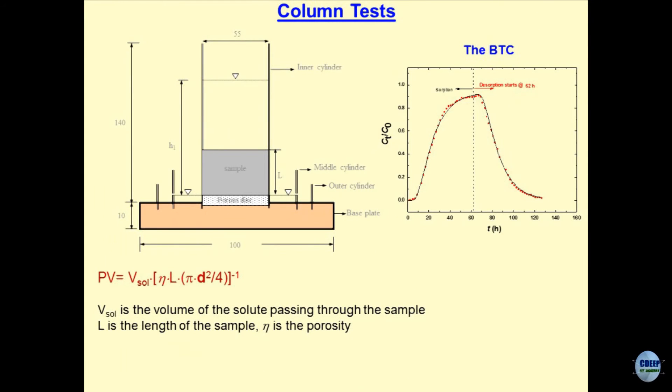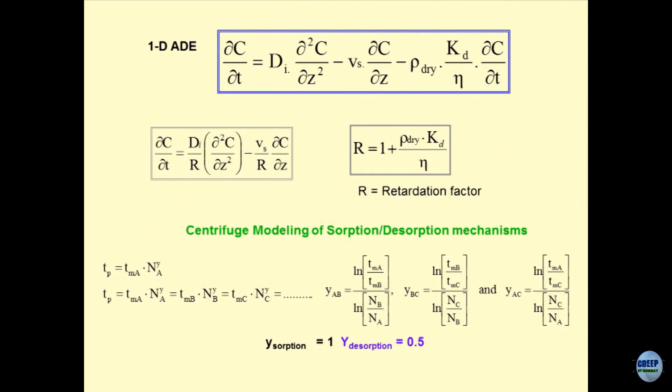We have used this information to solve one dimensional ADE. This is the form of the ADE. Del C by del T equal to diffusion coefficient del square C by del Z square minus Vs into del C by del Z minus dry density of the porous media KD upon porosity del C by del T. If I take this term over here, this will become del C by del T equal to Di del square C by del Z square minus V upon R del C by del Z and 1 upon R here also, where R is equal to 1 plus rho dry density KD upon porosity. Porosity can be determined by using porosimeters, mercury intrusion porosimeter MIP in the best possible way. The density of the porous media is known. If KD is known, retardation coefficient can be obtained. By conducting these tests, you can get KD parameter also. Once you get KD parameter, you get R parameter also. And now you can solve the ADE.